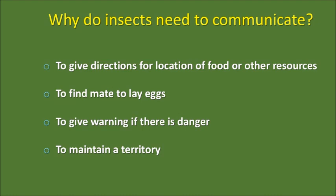Another reason they need to share information is when they want to find a proper partner to lay eggs. Most insects lay eggs, so they need a mother and a father for the baby — the insects have to find a partner, and for that they need to communicate. Another very important reason is if there is a danger somewhere, the insect has to tell the others not to go in that direction.